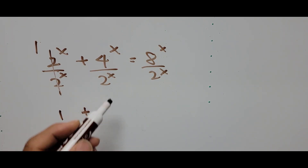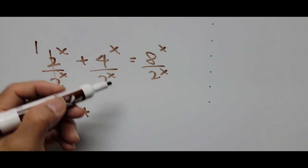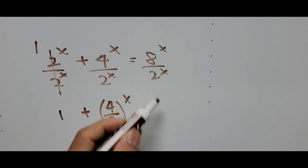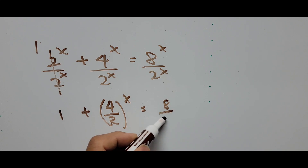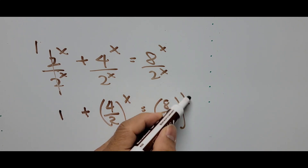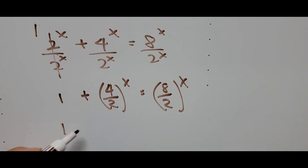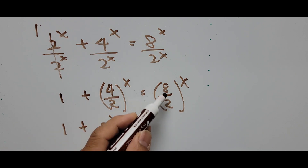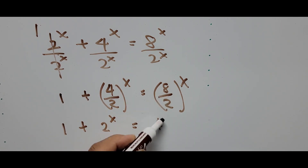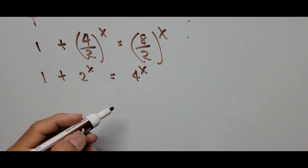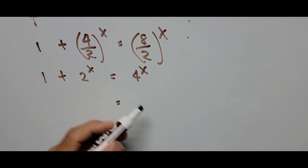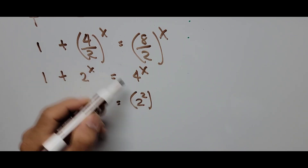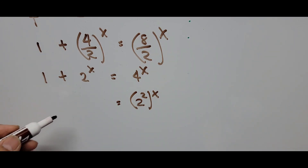The second term: 4 divided by 2, both raised to the power of x. And the same way on the right-hand side: 8 over 2 to the power of x. So the equation now becomes 1 plus (4/2)^x equals (8/2)^x, which is 1 plus 2^x equals 4^x. The right-hand side can be written as 4 = 2 squared, raised to the power of x.